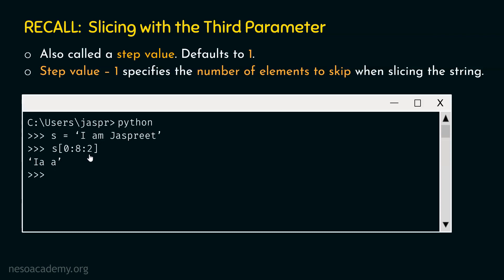We got this string because we specified step value two. This value needs to be decremented by one, so we subtract one from the step value, giving us one. This one tells us that we need to skip one character every time. We specified zero to eight, which means we need to access the substring 'imjus', since the starting character has index zero and the last character has index seven. We always specify the end index plus one of the substring we want to access.